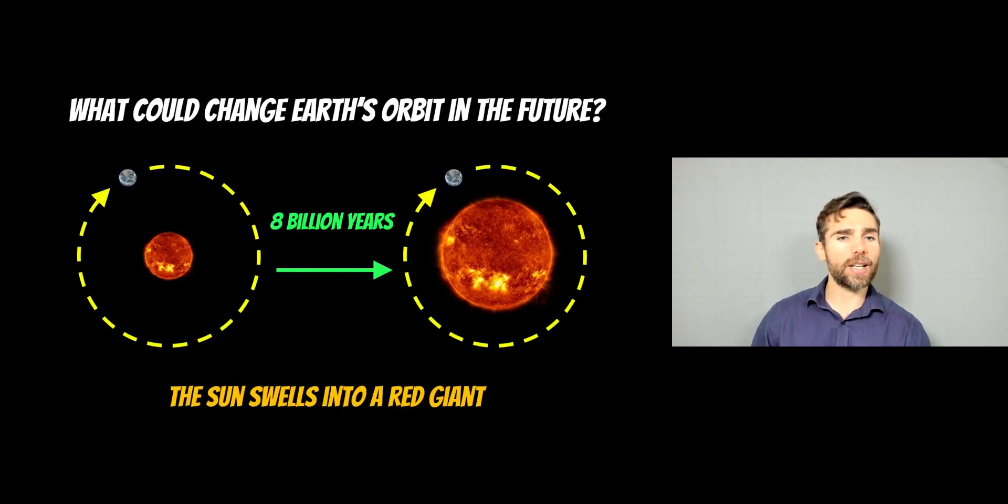So that's what's occurring now. But going forward, what could change Earth's orbit in a more significant manner? Well, in eight billion years time, the Sun is going to swell up into a red giant. It's going to cease hydrogen fusion in its core. It's going to go to the next phase, which means it's going to swell up in size.